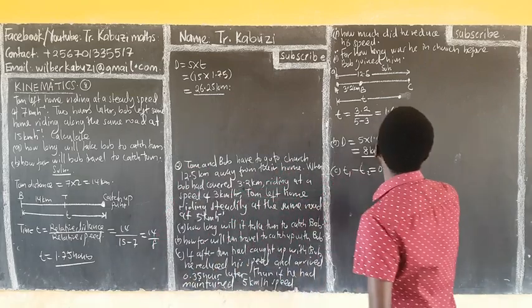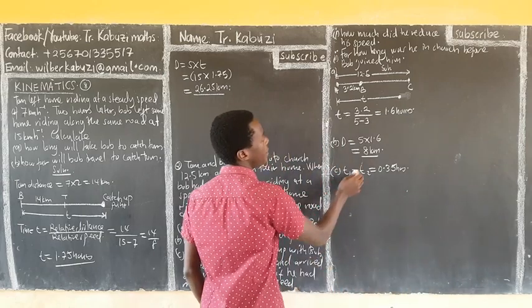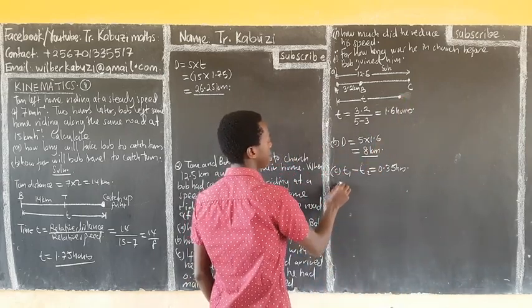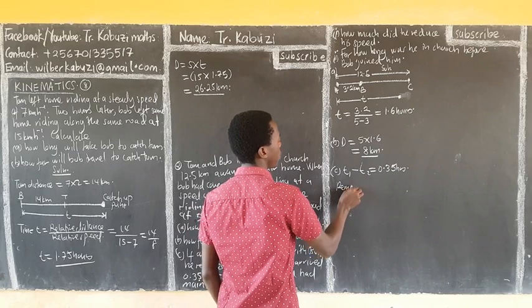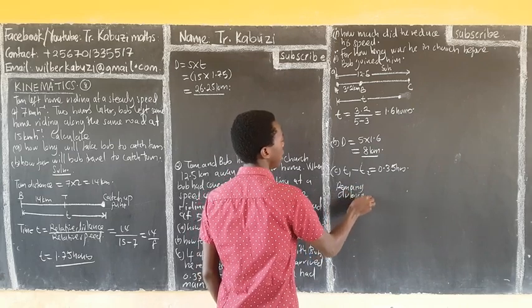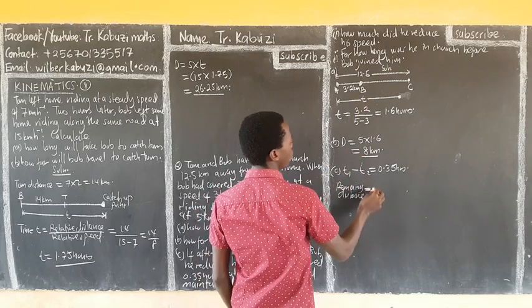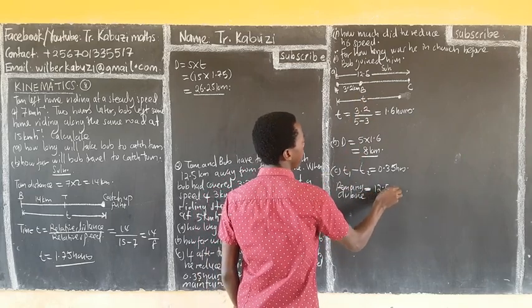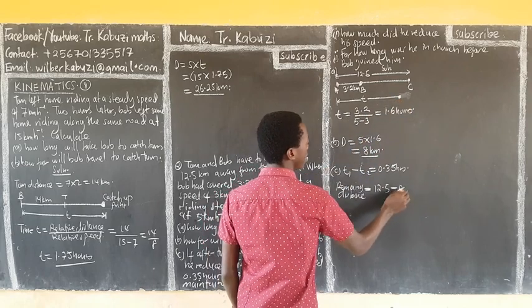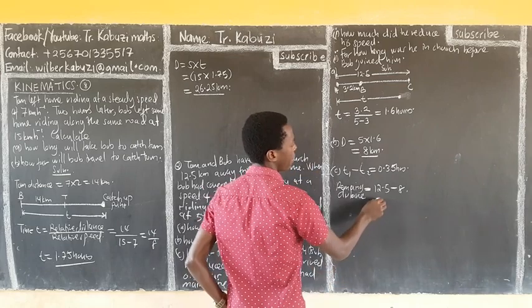If they met at 8 km, the remaining distance is the total distance to church minus where they met. So the remaining distance is 12.5 minus 8, which gives 4.5 km.